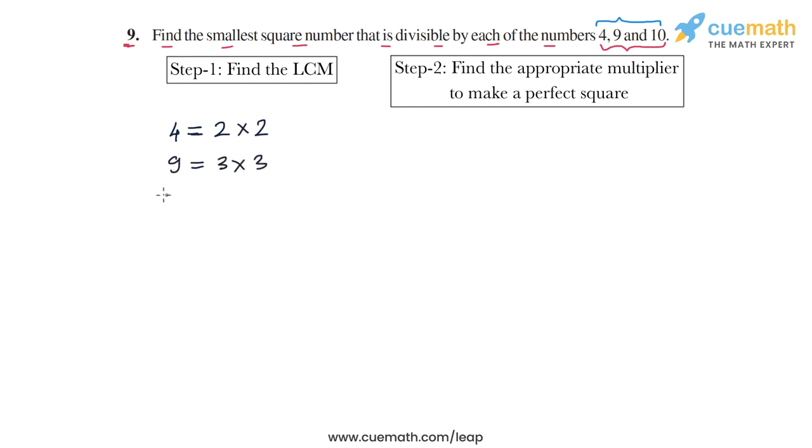And 10 is equal to 2 into 5. So from this we can write the LCM easily. The LCM - the maximum number of 2s in any number is 2 in 4, so the LCM should have 2 repeated twice. Then the maximum number of 3s is also 2, so the LCM should have 3 repeated twice.